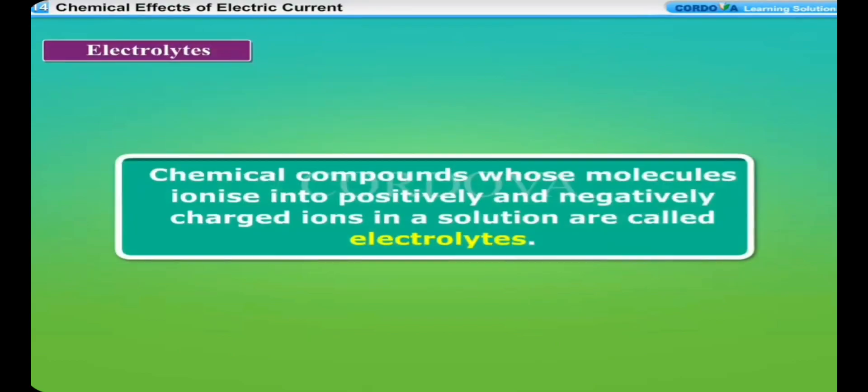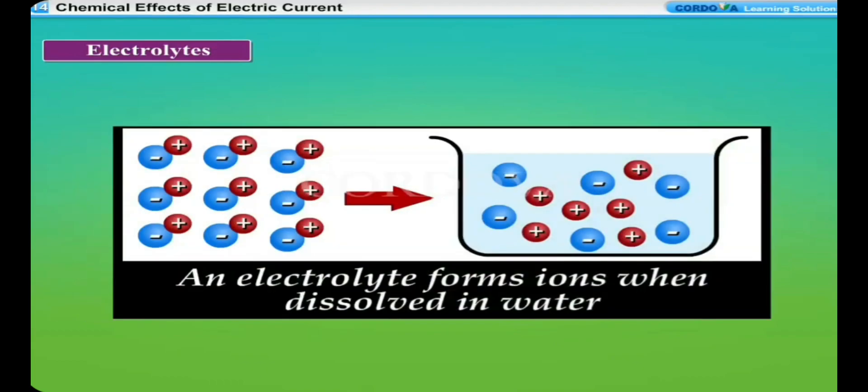Electrolytes: Chemical compounds whose molecules ionize, or separate into positively and negatively charged ions in a solution, are called electrolytes. So, electrolytes are chemical compounds which conduct electricity when dissolved in water or in molten state. An electrolyte produces ions when it dissolves in water. For example, when sodium chloride, or common salt, is dissolved in water, it produces sodium ions (cations) and chloride ions (anions). The solution of sodium chloride in water is called aqueous solution of common salt.